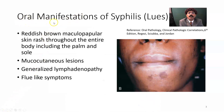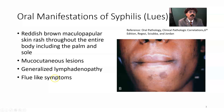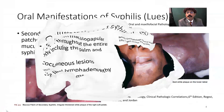Moving on to the oral manifestations of syphilis — in secondary syphilis, we have a maculopapular skin rash throughout the entire body including the palms and soles in around 80% of cases. There are also mucocutaneous lesions, generalized lymphadenopathy, and flu-like constitutional symptoms.